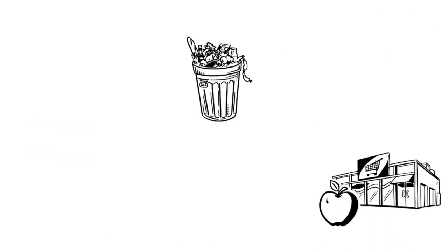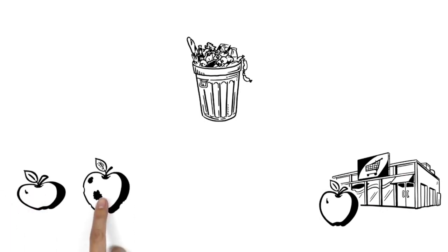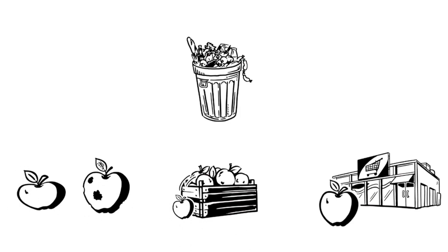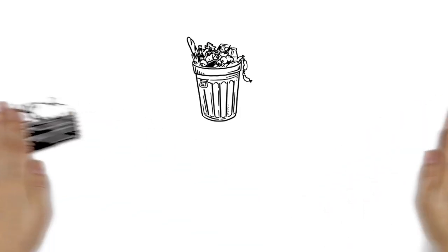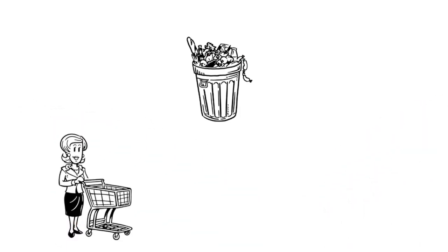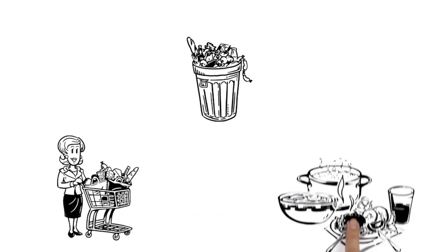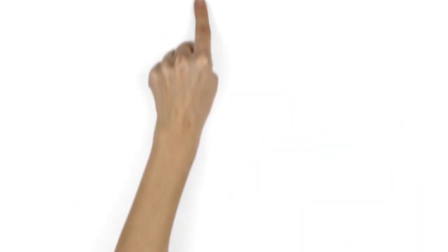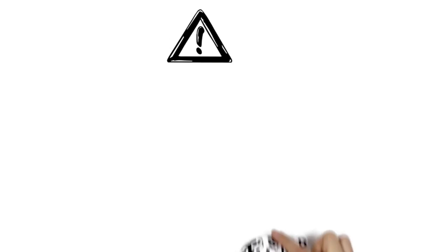Food waste has a lot of different causes. Even before products get to the supermarket, many of them are discarded — either they don't meet appearance and quality standards, or they weren't packaged correctly for shipment, so they spoil prematurely. But the main cause is consumers: usually it's simply because they buy too much or cook more than they can eat.